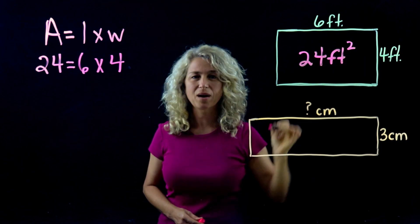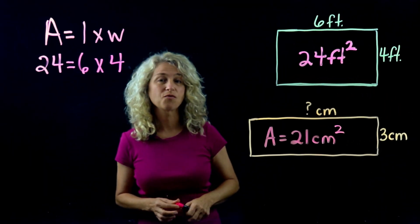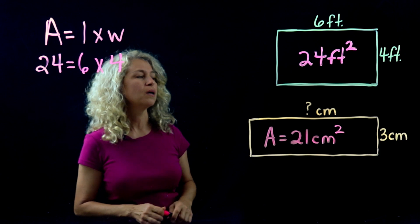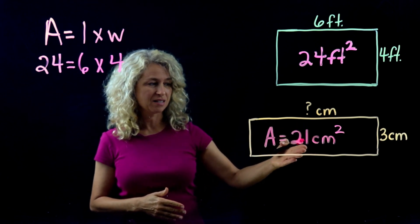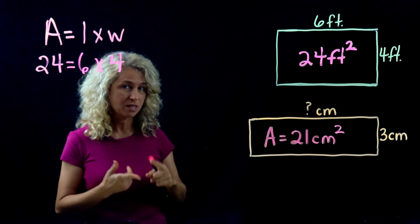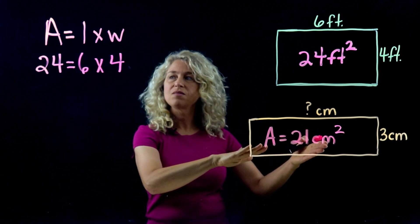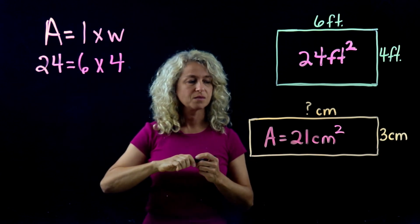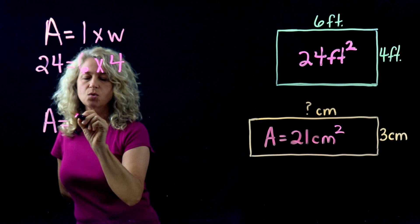So for this next example, I'm already given what the area is. So remember, area equals length times width. Right here, so if I'm given the area and we know that the area is 21, I can come and fill in those values: 21 equals blank times 3.